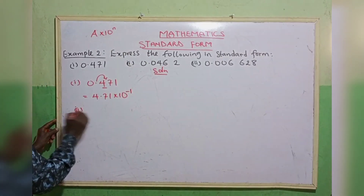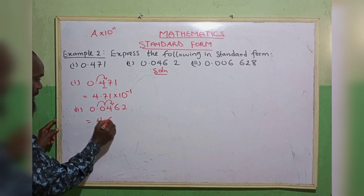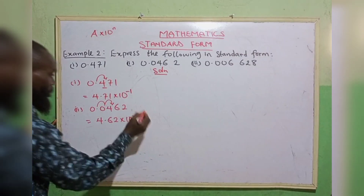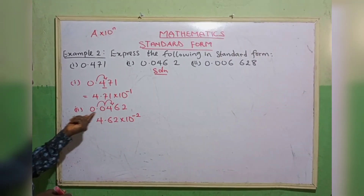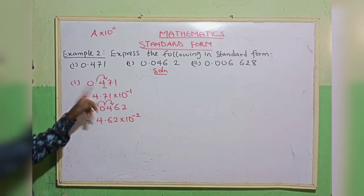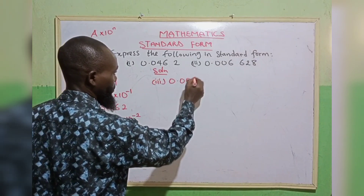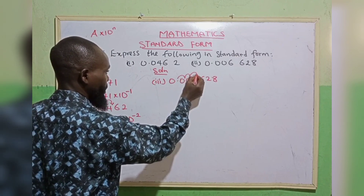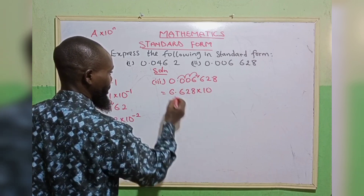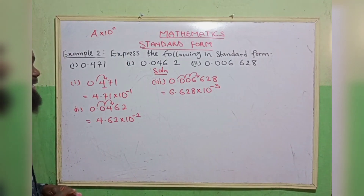The second one: 0.0462. We move the decimal point backward 1, 2 times, giving 4.62 multiplied by 10 raised to the power minus 2. We move twice to the back, that is 2. You can also count the number of zeros before the digits — we have 2 zeros, so the power is minus 2. The third one: moving backward 1, 2, 3 places gives 6.628 multiplied by 10 raised to the power minus 3. That is how to get the standard form.